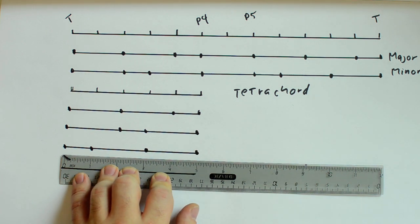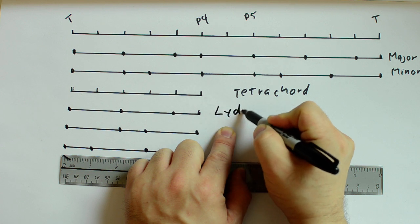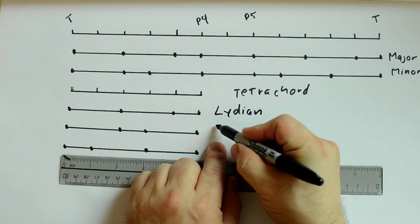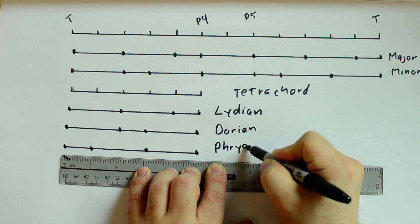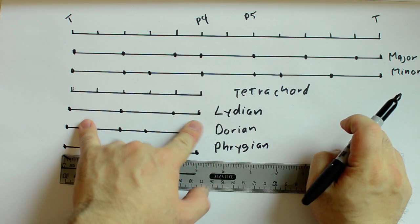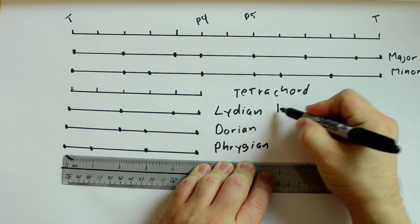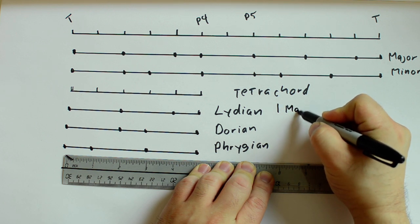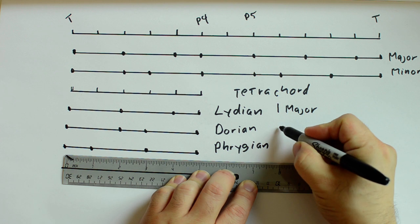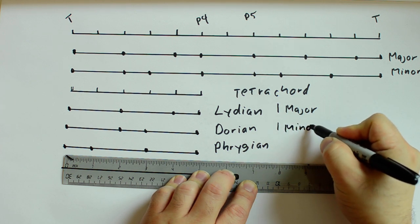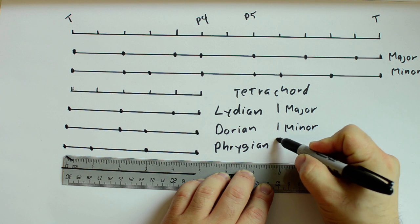Now these have names, related to the modes you may be familiar with. This is the Lydian tetrachord. This is the Dorian tetrachord. And this is the Phrygian tetrachord. The Lydian tetrachord corresponds to the first half of the major scale and the upper half of the major scale, so later theoreticians would call this the major tetrachord. The Dorian corresponds with the first half of the minor scale, so later theoreticians would call this the minor tetrachord. The Phrygian corresponds with the upper half of the minor scale, so they would call this the upper minor.